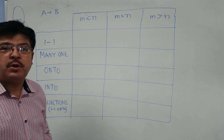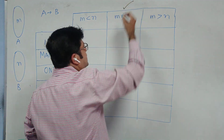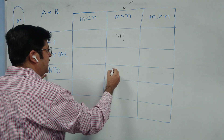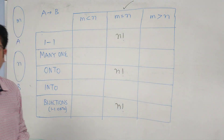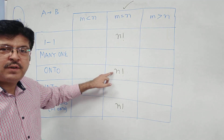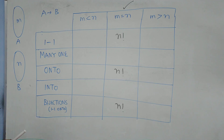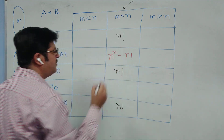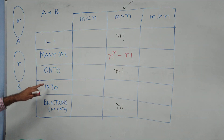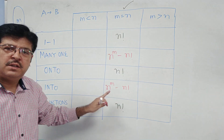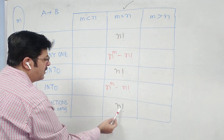The most important case for your examination is M equals N. When M equals N, the number of one-one functions is N factorial, the number of onto functions is N factorial, and bijections are also N factorial. For example, with 5 elements in both sets: one-one = 5! = 120, onto = 120, bijections = 120. Many-one functions equal total functions minus one-one functions. Into functions equal total functions minus onto functions.